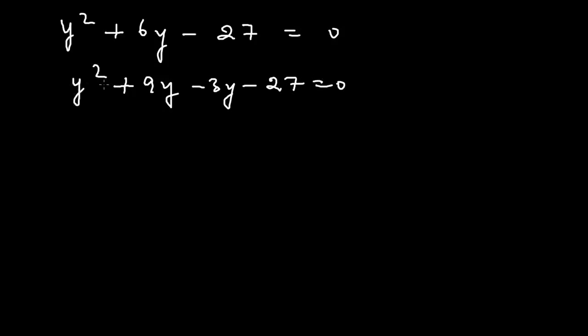Here is Y squared. We shall take common Y from both these two terms, then it will be Y plus 9. Here we shall take common minus 3, then it will be (Y + 9) in the bracket.